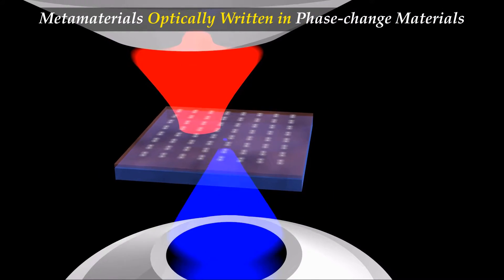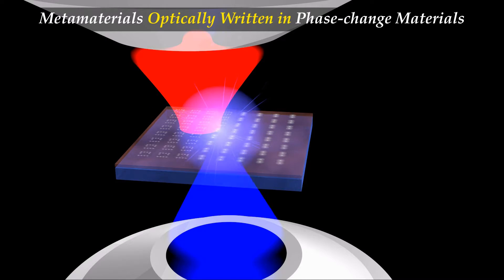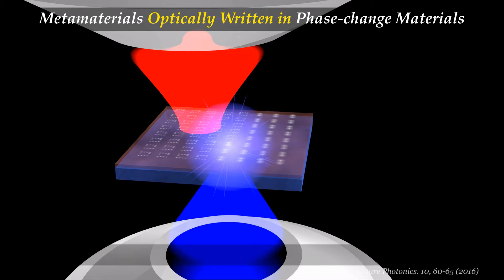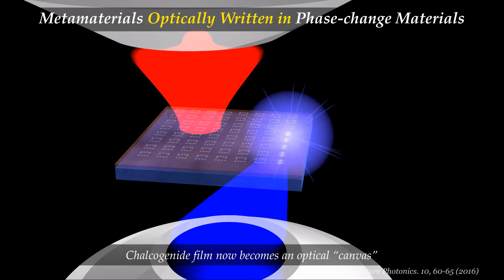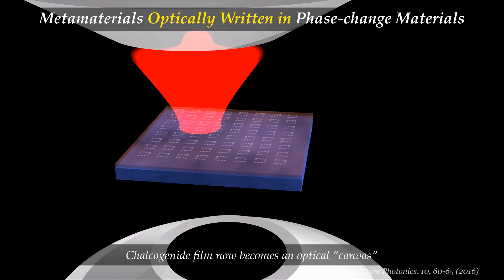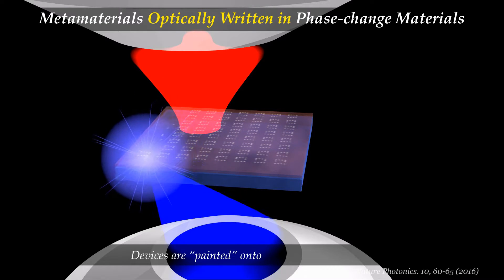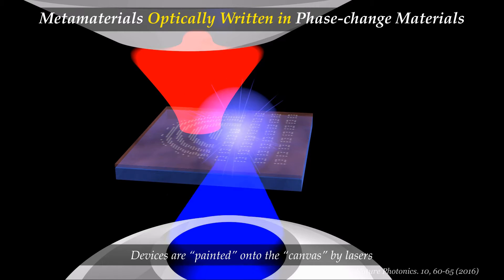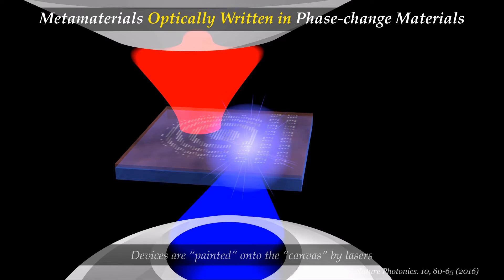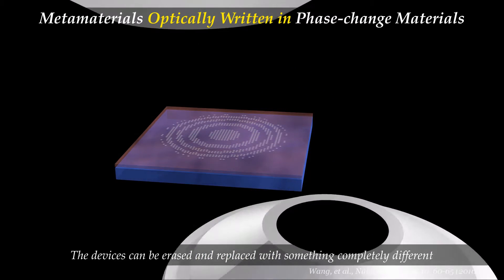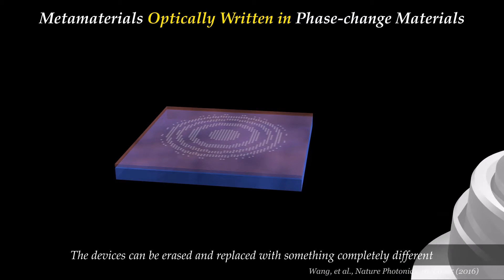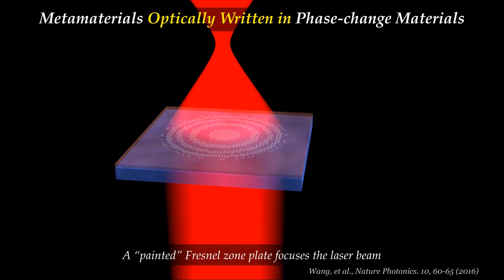The third example goes even further. We do away with the external structuring altogether and use a chalcogenide film as an optical canvas on which we can paint devices using a laser beam. Starting with one metamaterial, and by scanning a tightly controlled series of laser pulses across the sample, we can erase it and write another metamaterial pattern — and then, at will, erase that and write a completely different optical element, in this case a Fresnel zone plate, which is then used to focus a laser beam.